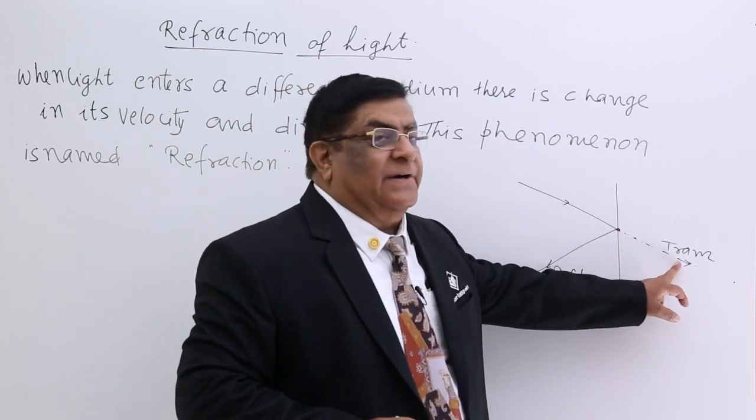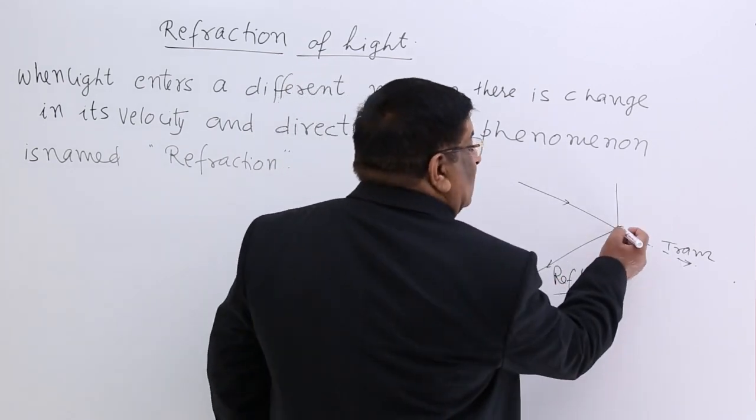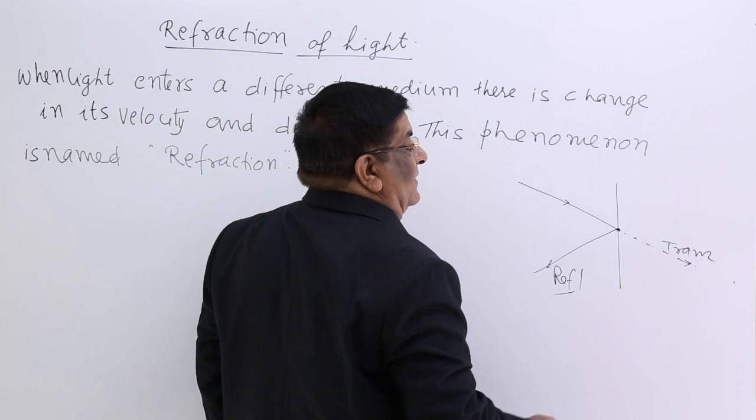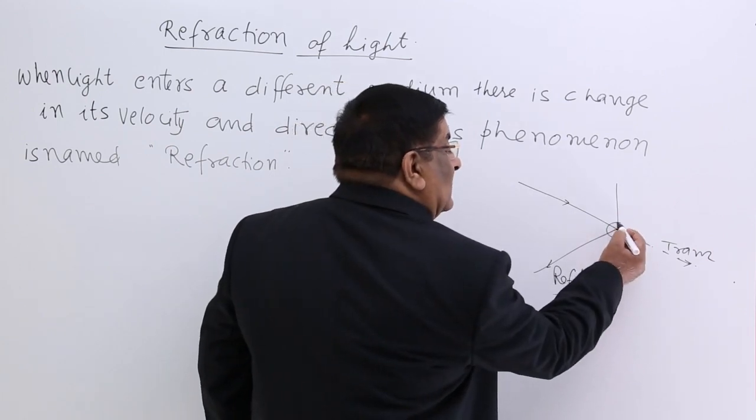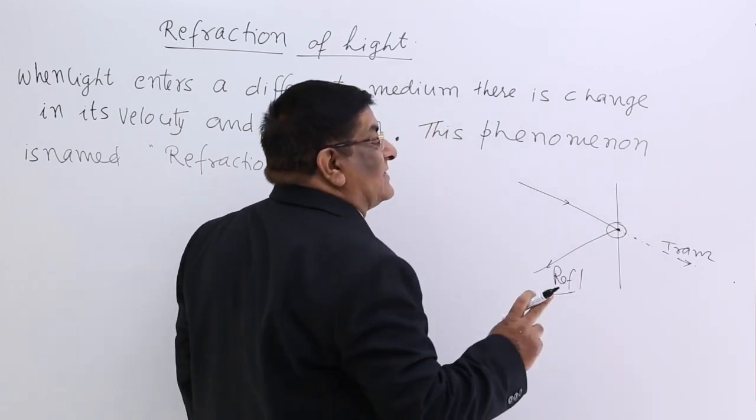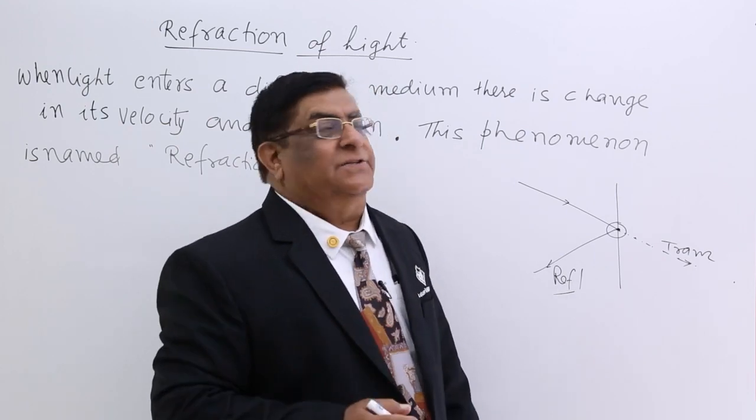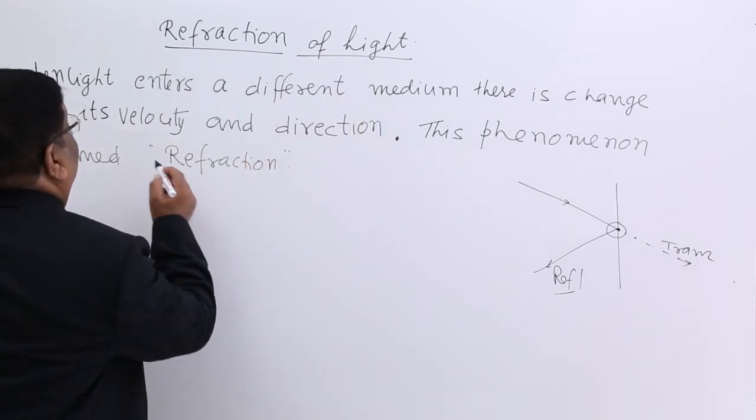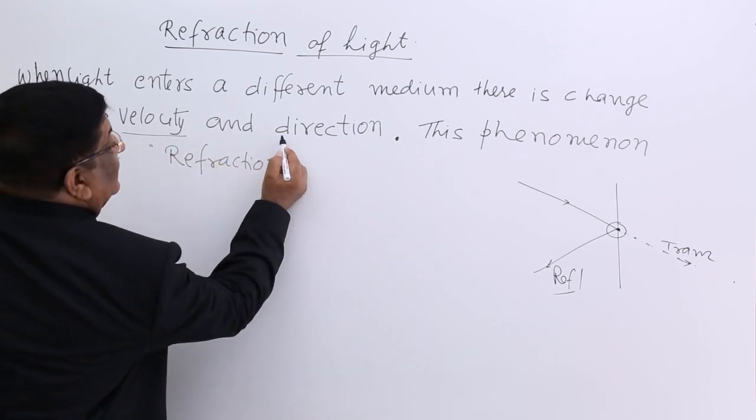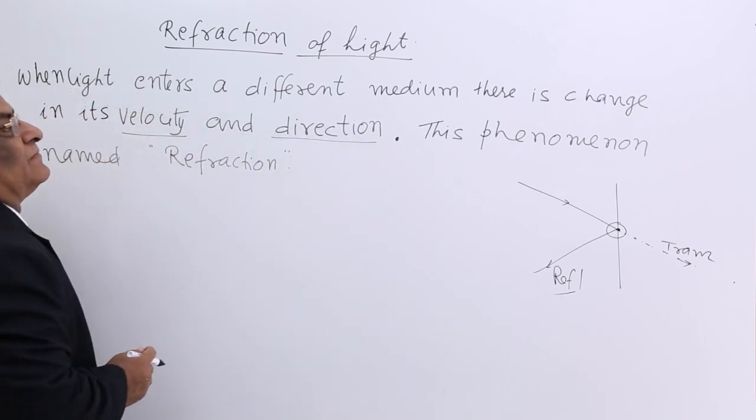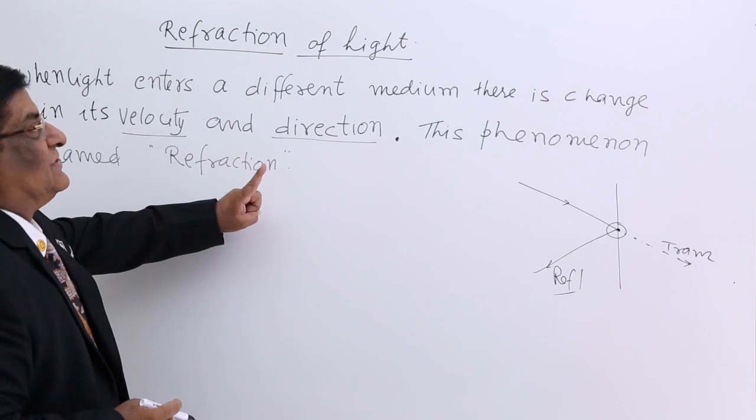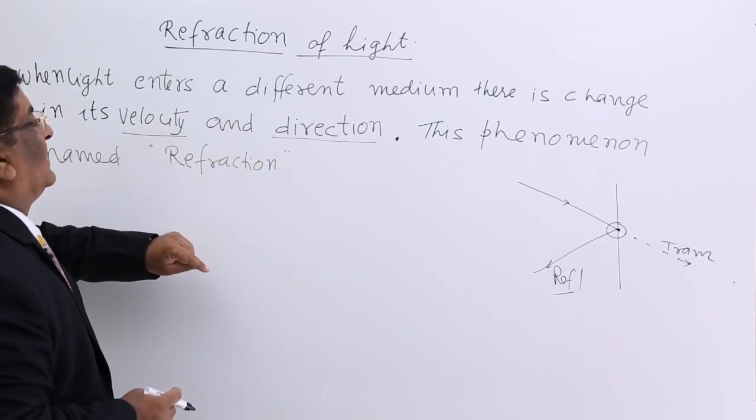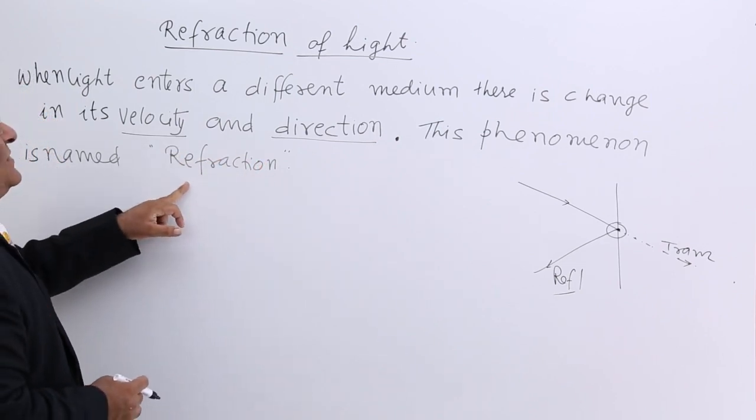The light which enters the different medium starts entering from this point. Now at this point when it enters, there are certain changes which take place, and these changes are in velocity and direction.